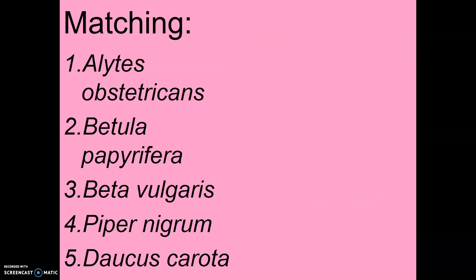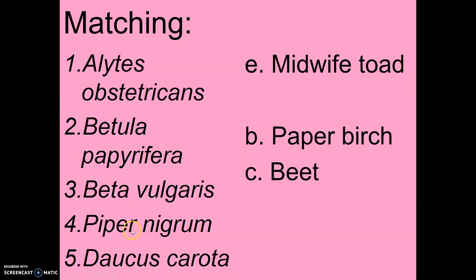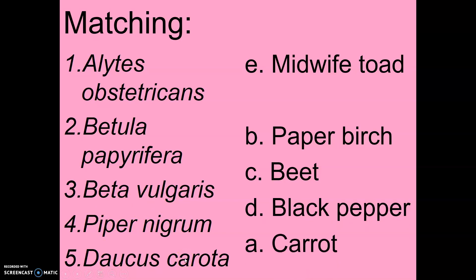Let's see how we did. The first one — look at 'obstetricans' — that is the midwife toad, because this is what a midwife does: they help deliver babies, like your OB-GYN. Betula papyrifera is paper birch — you can see 'paper' in there. Beta vulgaris is a beet. Piper nigrum — dark color and pepper — so black pepper. Daucus carota is a carrot. You may see some of these on a test or homework quiz, and you should be able to figure out what the word would be.